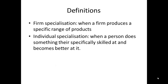Here are a few definitions you will need to jot down. Firm specialisation is when a firm produces a specific range of products. Individual specialisation — so individual workers — is when a person does something they are specifically skilled at and becomes better at it, resulting in a higher output.